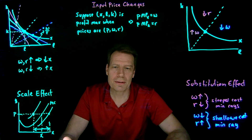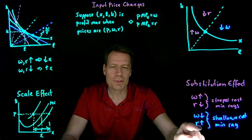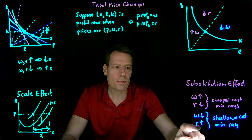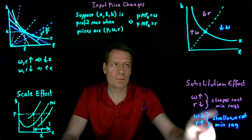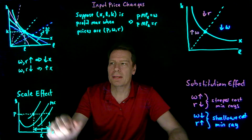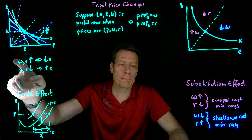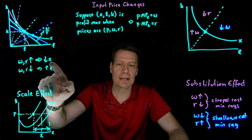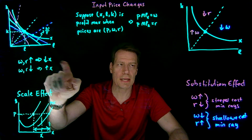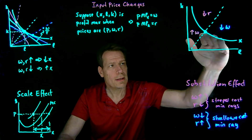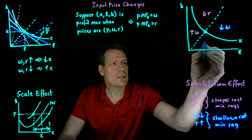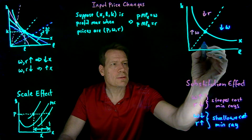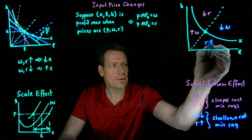That leaves one more region, which is what happens when we have an increase in the rental rate. An increase in the rental rate means we'll be on a shallower ray, but it's an increase in an input price, so it's going to have a negative scale effect — causing us to scale down. Scaling down but on a shallower ray puts us in this final region.